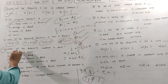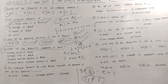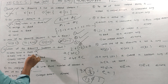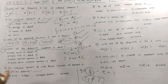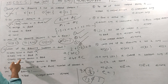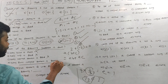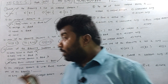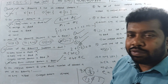Fourth question: which of the following statements is true? Every group is a field — false. Every ring is a field — false. Every integral domain is a field — false. Every finite integral domain is a field — true. So the correct answer is: every finite integral domain is a field.